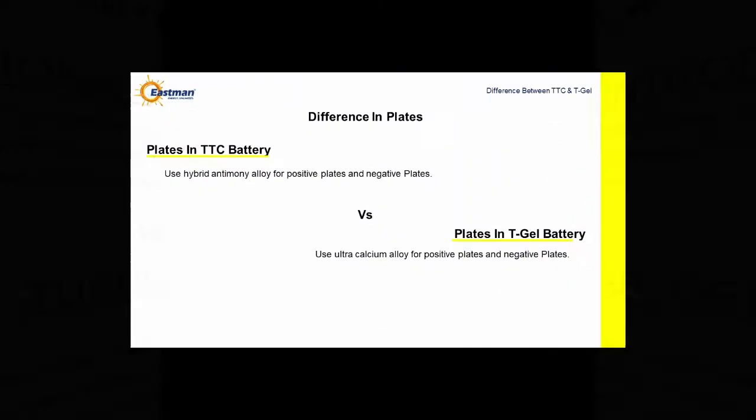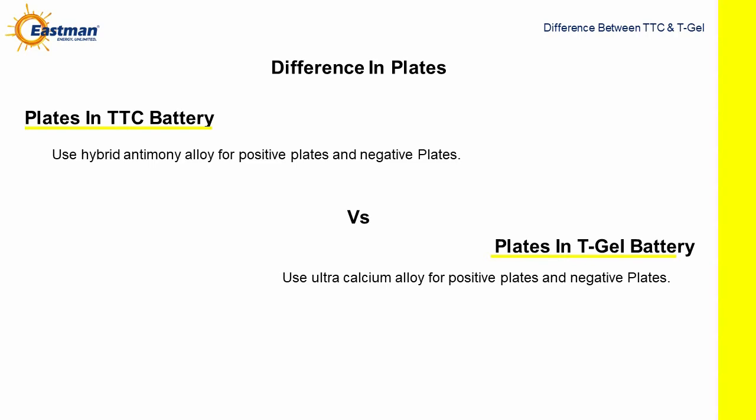Difference in plates. TTC battery uses hybrid antimony alloy for positive plates and negative plates. Whereas T-Gel battery uses ultra-calcium alloy for positive plates and negative plates.